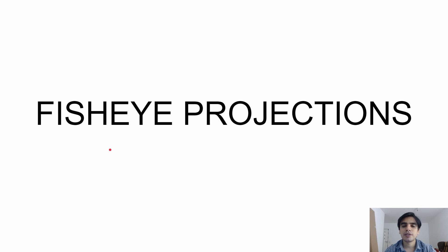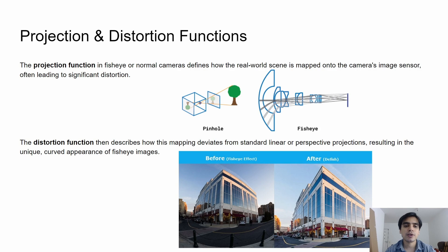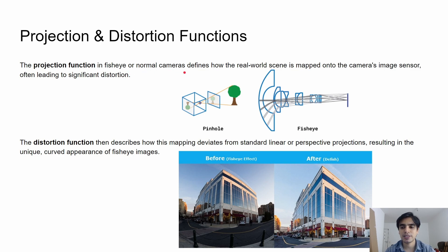Hello everyone, welcome back to my channel. In this video we are going to talk about different fisheye projections that fisheye cameras use in order to project objects from the real world onto the image plane inside the camera. Before going into detail, we will first talk about the projection and distortion functions. The projection function in fisheye and normal cameras simply defines how the real world scene is mapped onto the camera image sensor, which also leads to significant distortion.